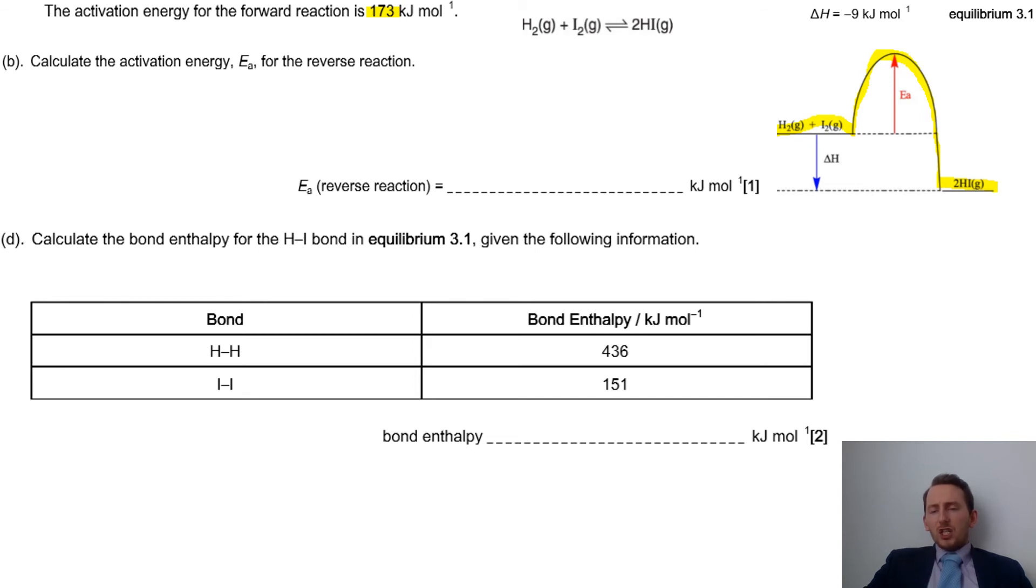the activation energy is from the very top of that peak all the way down to the bottom. So that therefore means we need the value for activation energy for this, which thankfully we have over here. And we also need the value for delta H, which again we have there as well. So we take both of those and we simply add them together, which is 182.